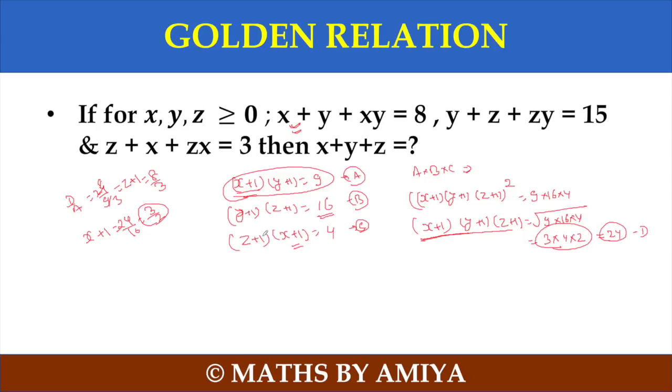And if you divide here, that is d by c, so you have y plus 1. z plus 1, z plus 1 cancel. x plus 1, x plus 1 cancel. And you have y plus 1. And this will be 24 upon 4 means 6. Now we have three.